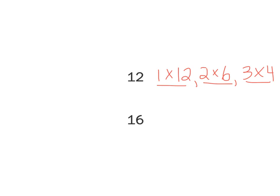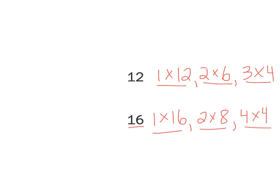For 16, the different ways to make 16: 1 times 16. It's an even number, so 2 times 8, and then there's one more — 4 times 4. So these are our factor pairs for 16: 1 and 16, 2 and 8, 4 and 4.